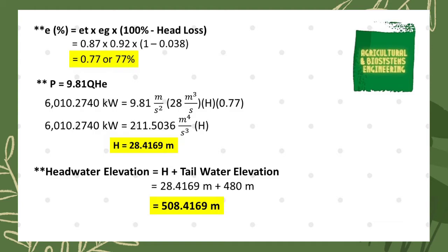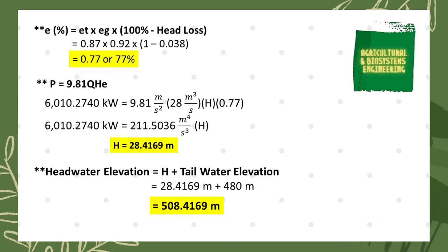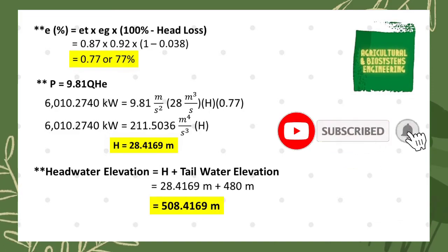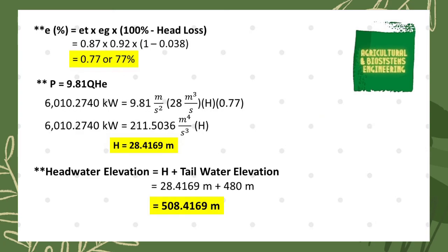Using the turbine net head value, we can now compute the headwater elevation. The formula is: headwater elevation equals the turbine net head H plus the tailwater elevation. Substituting the known values, we get the headwater elevation equal to 508.4169 meters.